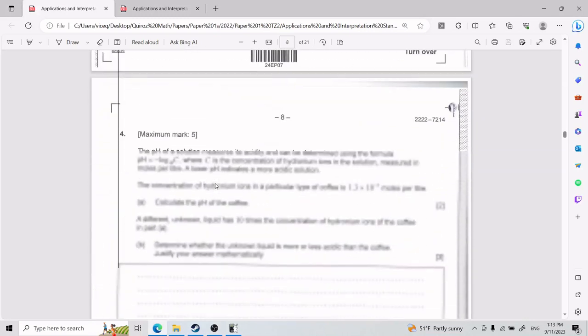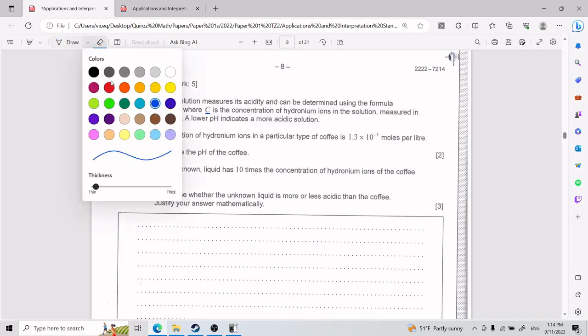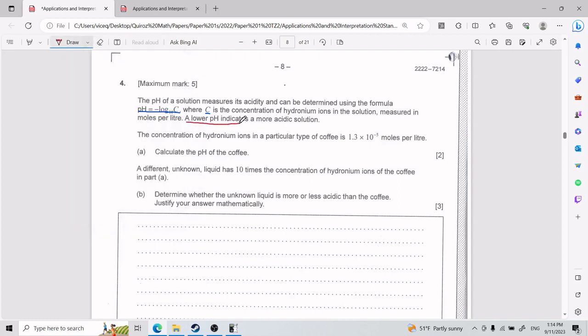Alright, so for this fourth one, we have that the pH of a solution measures its acidity and can be determined using the formula, where C is a concentration of hydronium ions in the solution, measured in moles per liter. Also important, a lower pH indicates a more acidic solution. That sounds very important. It'll probably come by or be important later. The concentration of hydronium ions in a particular type of coffee is this number, that moles per liter.